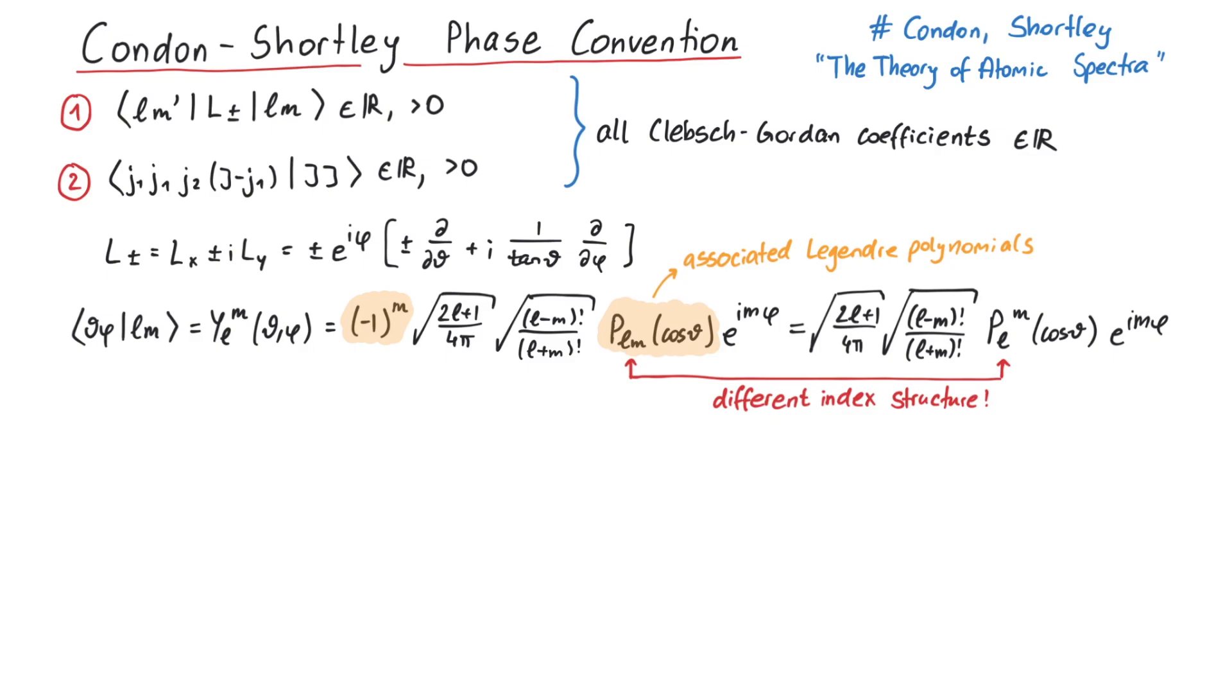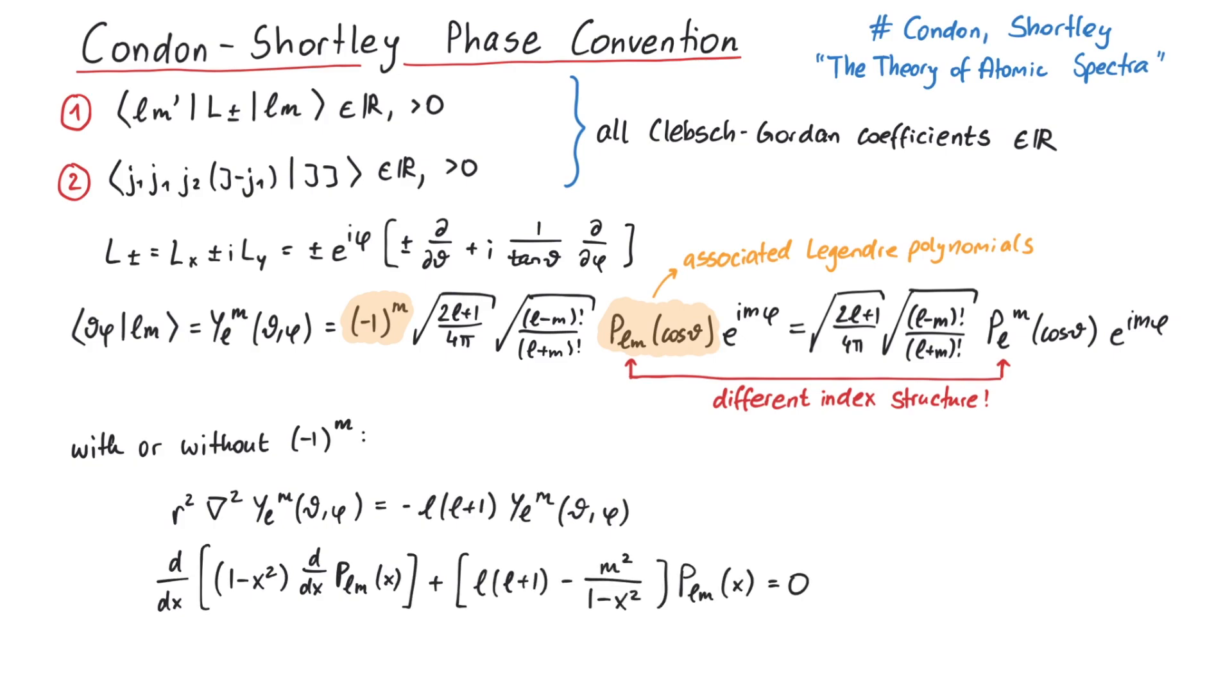Being a convention means that even if we do not include this minus one factor, the spherical harmonics and the associated Legendre polynomials would still fulfill their respective defining equations. So, why is this minus one so useful?